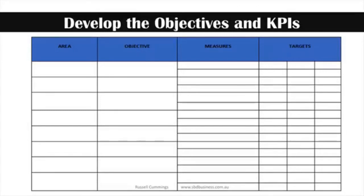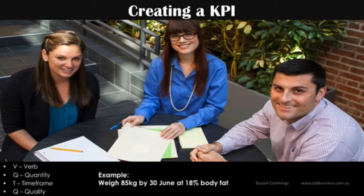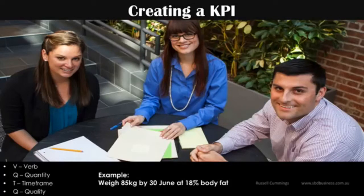Once you get that framework mapped out, it's a good idea to set a key performance indicator for the next 12 months. I like to use a structure called VQTQ — it's a great way of creating a KPI or measure. VQTQ stands for Verb, Quantity, Time frame, Quality. You create a simple statement — for example, I want to weigh 85 kilograms by the 30th of June at 18% body fat.